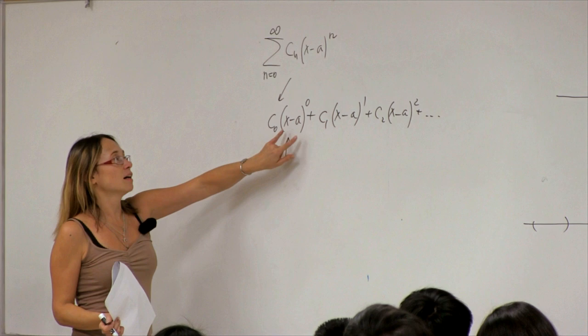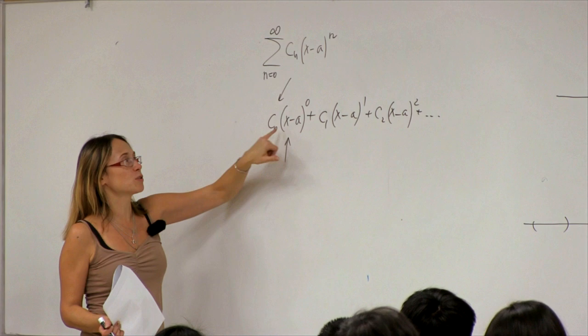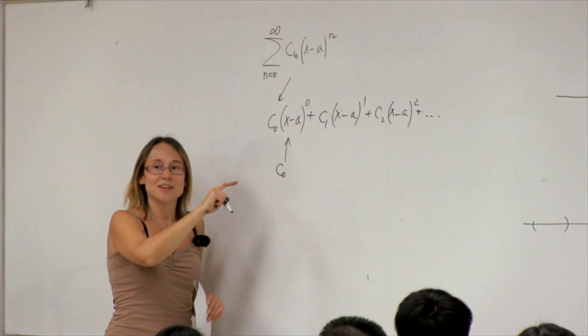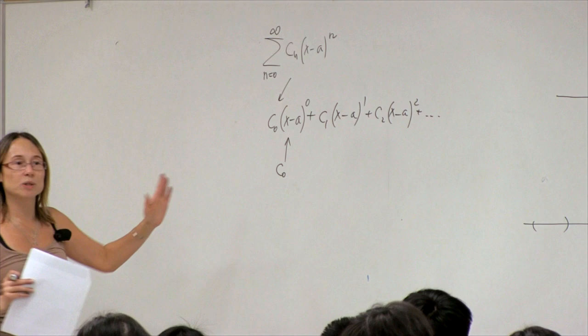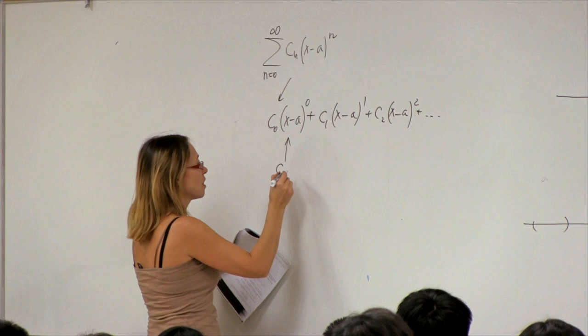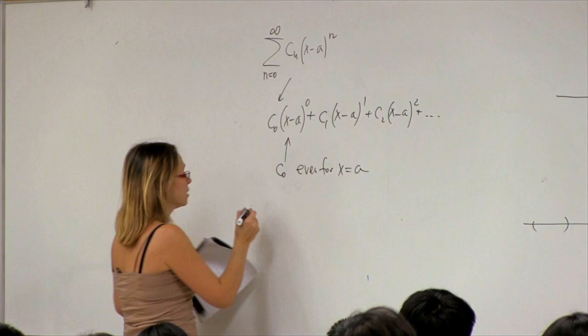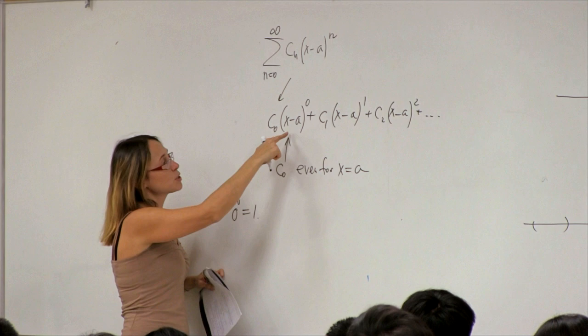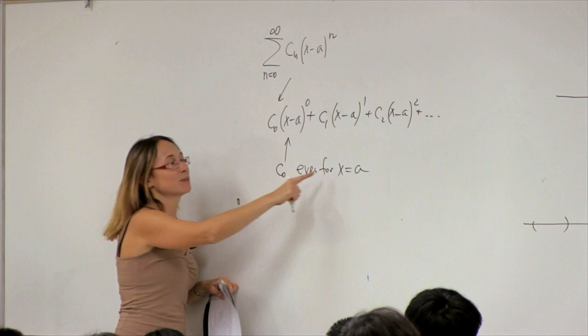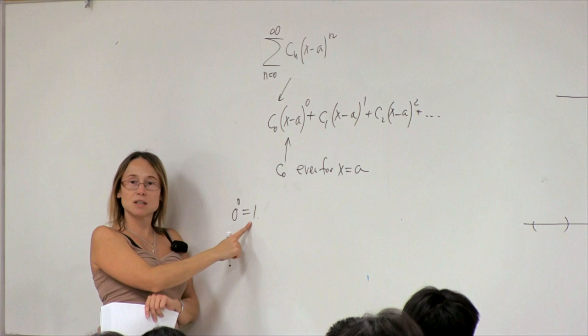When x equals a, you have 0^0, which is an indeterminate form. So when using this notation for power series, we adopt the convention that 0^0 equals 1, even for x equals a. This means the first term equals c₀ even when x equals a.